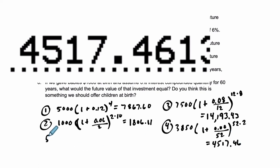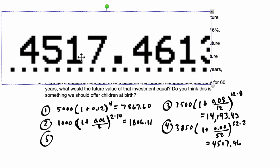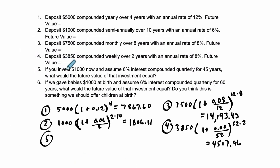And then our last one, number five. Thanks for bearing with me. If you invest $1,000 now, and assume 6% interest compounded quarterly for 45 years, 1 plus 0.06 divided by 4. I chose 45 years because, let's say you're about 18 right now, that'll bring you relatively close to retirement, about 63.